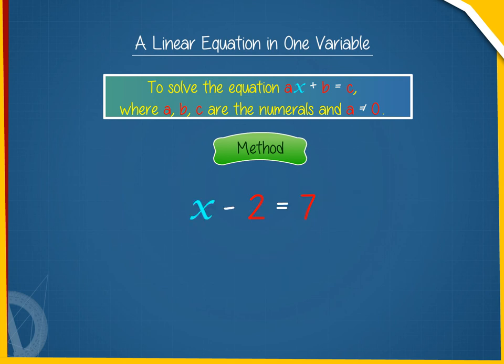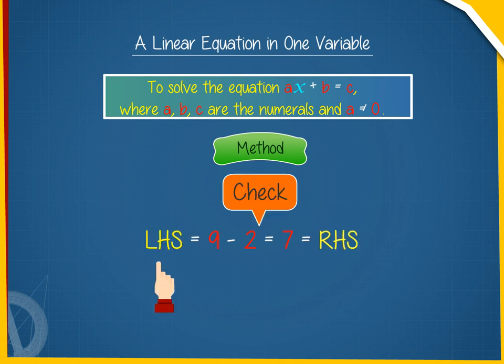Let us solve x minus 2 equals 7. Add 2 to both sides: x minus 2 plus 2 equals 7 plus 2. Therefore, x equals 9. This is the required solution. Check: LHS equals 9 minus 2 equals 7 equals RHS.